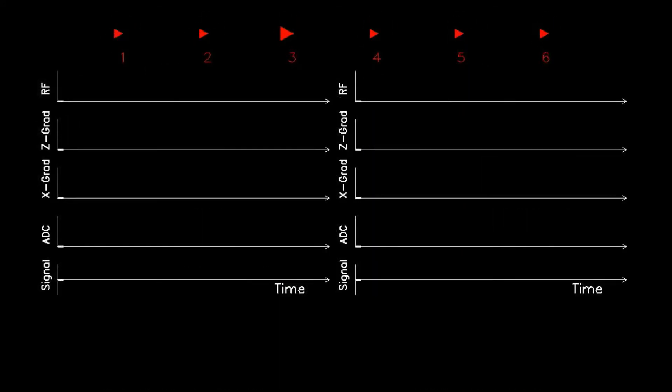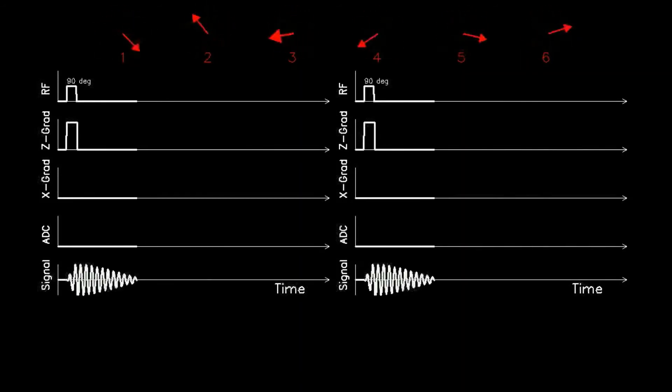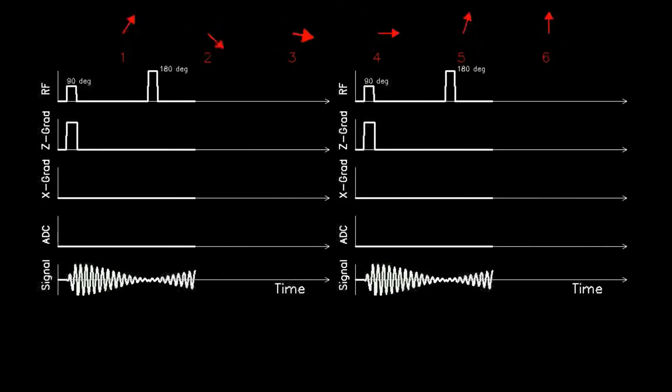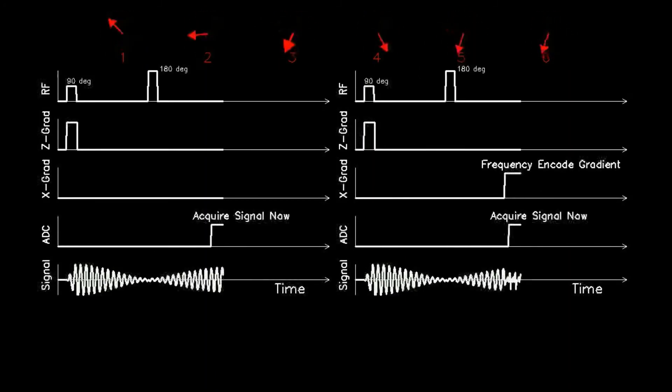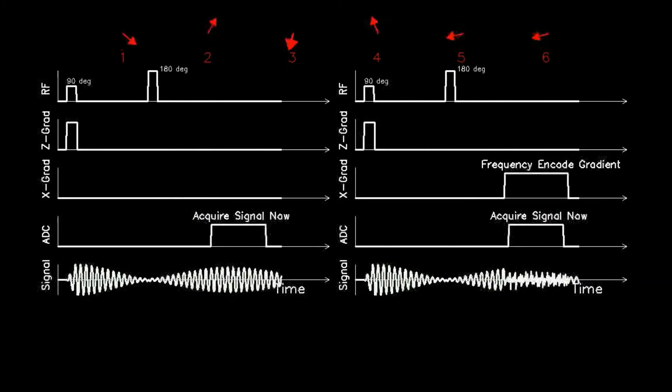Since the acquired signal is a summation of signals at different frequencies, a Fourier transform is used to extract the magnitude of each frequency component. Since each frequency corresponds to a unique position along the X axis, the Fourier transform, in effect, separates and identifies the signal from each voxel along the X axis.